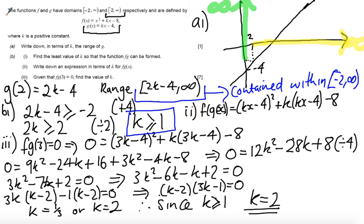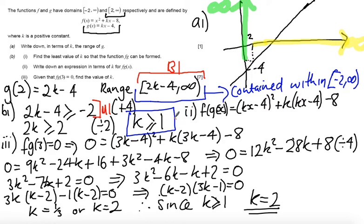Let's have a look at how the marks are awarded. If you've got that the range is from [2k minus 4 to infinity] you get a B1 standalone mark. If you set up the inequality 2k minus 4 greater than or equal to minus 2 you get a method mark. And if you get k greater than or equal to 1, you get an accuracy mark.